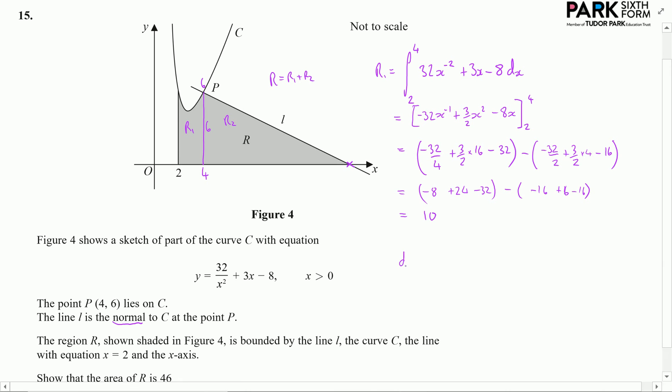So the next thing I want to do is differentiate, so I want to find dy by dx of that original function. I can take what I had in my integration to differentiate, so that's going to give me negative 64x to the power of minus 3 plus 3.